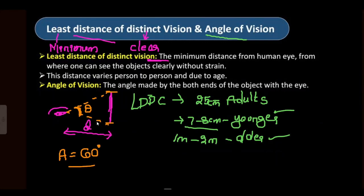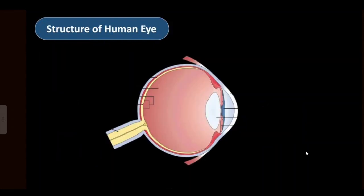You may wonder how the least distance of distinct vision varies from person to person and with age. To understand this, we need to discuss the structure of the human eye — what parts are inside the eye and how they function. The human eye is generally spherical in shape, and what we're viewing is a side cross-section.